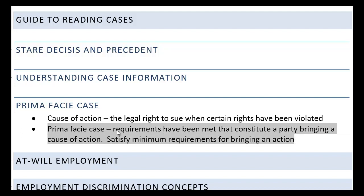Establishing my prima facie case means I have met the requirements that constitute bringing a cause of action. For example, if I'm bringing a discrimination case, I need to satisfy certain elements like convincing the court that I actually belong to a protected class and that I have suffered an adverse action. For different types of lawsuits, there's a different list of things I have to satisfy in order to establish that prima facie case.